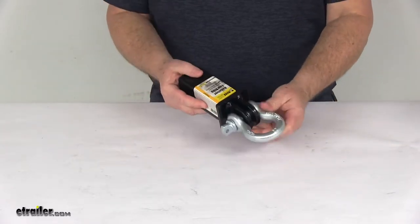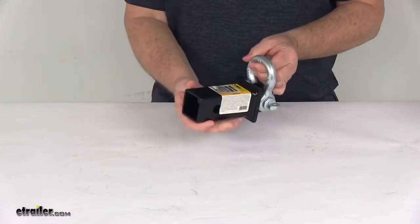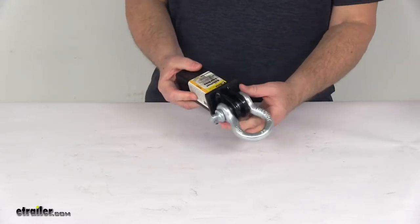Today we're going to take a look at the MaxTow tow strap loop for 2-inch trailer hitches. It has a 10,000 pound weight capacity.